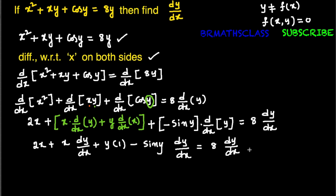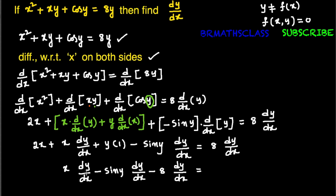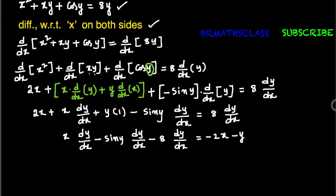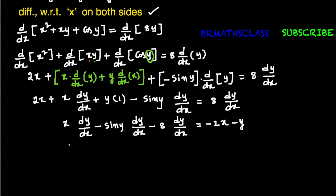Once the differentiation is over, write all dy/dx terms on one side and the remaining terms on the other side. All dy/dx terms on the left side: x · dy/dx minus sin y · dy/dx. From the right side, 8 · dy/dx is moved to the left, becoming −8 · dy/dx. The remaining terms 2x and y move to the right side, becoming −2x and −y. Taking dy/dx common on the left side gives: dy/dx · (x − sin y − 8).